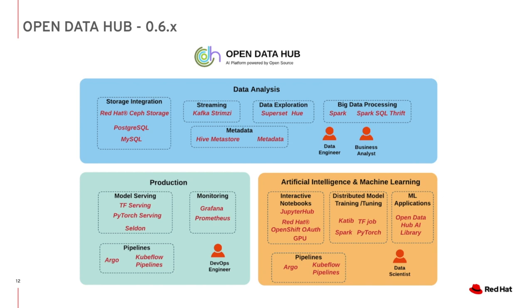For the data scientist, access to the data is through the storage interfaces just described. JupyterHub is provided for a development environment integrated with OpenShift authentication and GPU resources. Multiple tools for model training and verification are provided, such as TensorFlow Jobs, PyTorch Jobs, and Spark. Open Data Hub will also provide pre-trained models as part of the AI Library tool. For creating pipelines, data scientists can use Argo and/or Kubeflow Pipelines.